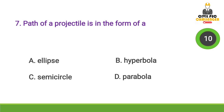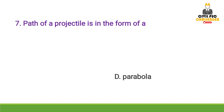Next question: Path of a projectile is in the form of — Answer: Option D, Parabola. A projectile moves in the form of a parabola. We will learn a little bit about physics here. The path of a projectile is in the form of a parabola.